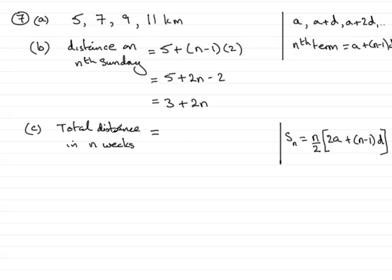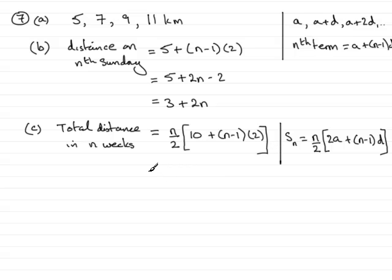The total distance in n weeks is going to be n over two, multiplied by twice the first term — the first term was five, so two fives are ten — plus n minus one times the common difference, which is two. Expanding the bracket gives ten plus two n minus two, so we have n over two multiplied by eight plus two n.